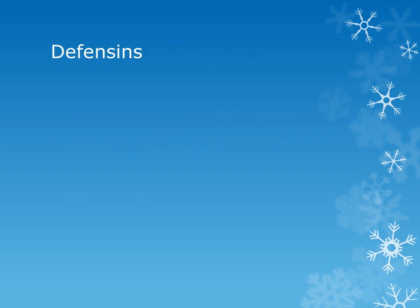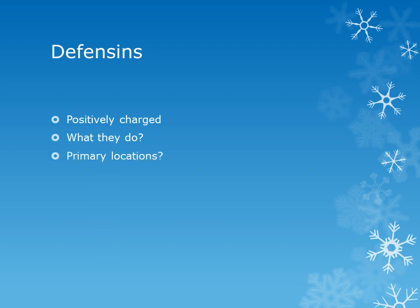Defensins are another important component of innate immunity. They are highly positively charged. The important function of defensins is that they kill microbes by creating holes in bacteria and ultimately damaging them. There are two types of defensins related to their locations: alpha defensin and beta defensin. Alpha defensins are present in neutrophils and Paneth cells in the intestinal crypts.